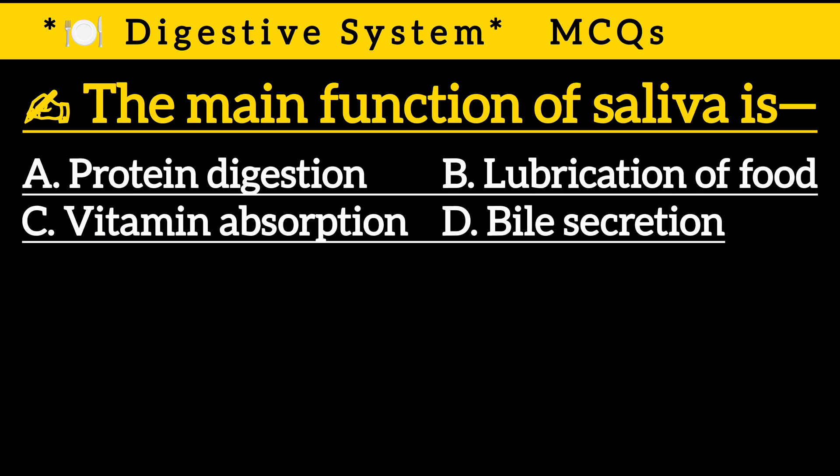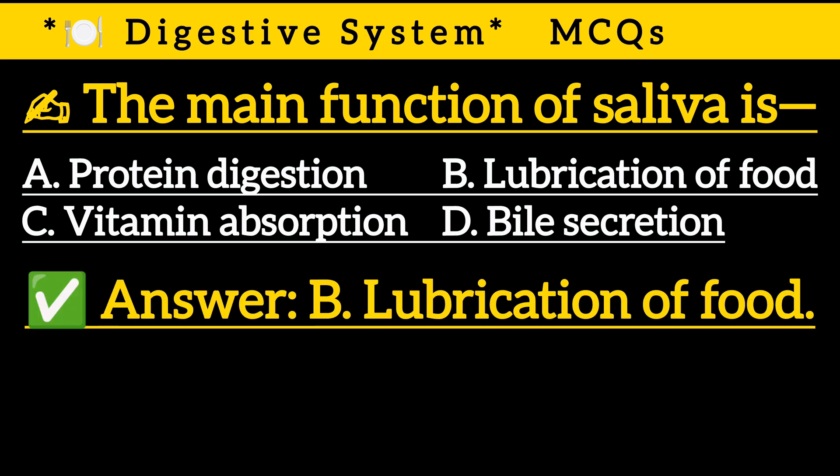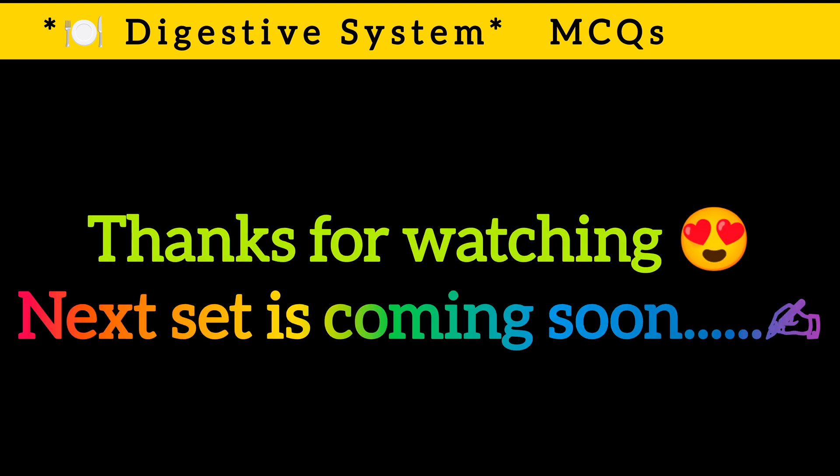Question 24: The main function of saliva is — Option A: Protein digestion, Option B: Lubrication of food, Option C: Vitamin absorption, Option D: Bile secretion. Correct answer is Option B: Lubrication of food. To be continued.